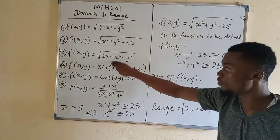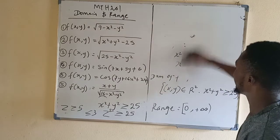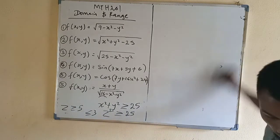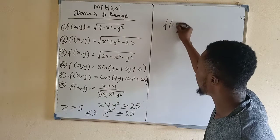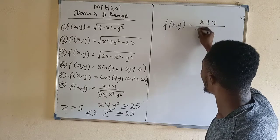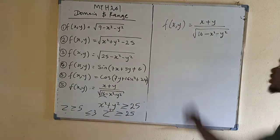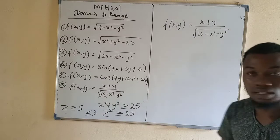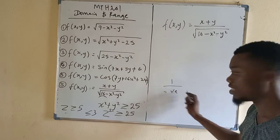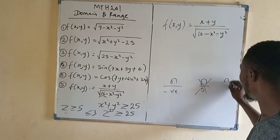Now let me solve the last one, number 5. We have f(x,y) equal to (x plus y) over square root of 16 minus x squared minus y squared. The numerator x plus y is an entire function — it can accept anything. So we concentrate on the denominator, because the denominator has a square root function. Remember: any number over a negative number can exist, but any number over zero does not exist.